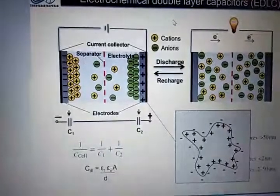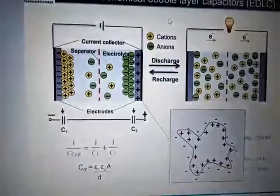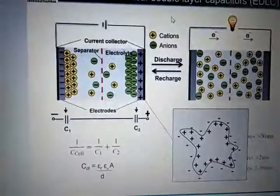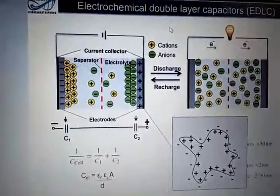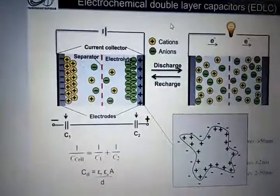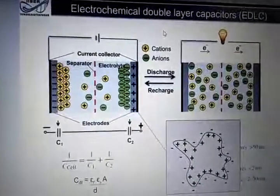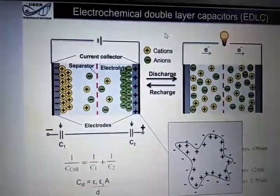Instead, if I have a highly porous material, every pore is basically infiltrated or wetted by this electrolyte and every surface of the pore will have an adsorption of these anions.